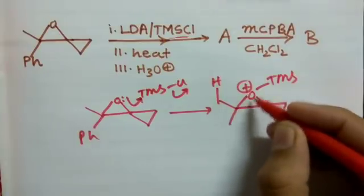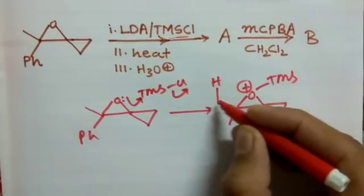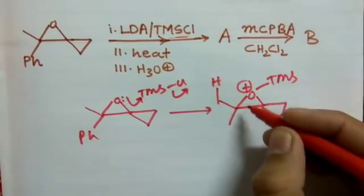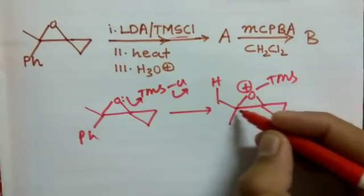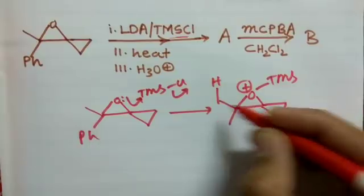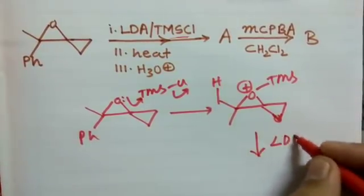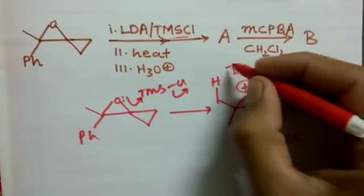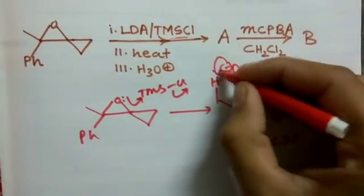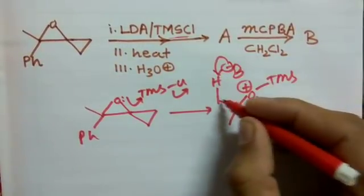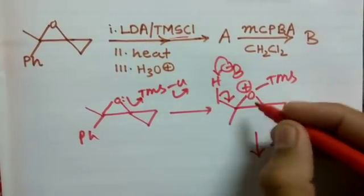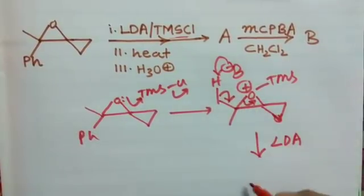As this positive charge is formed here, now this hydrogen can be acidic because this positive charge will induce electron deficiency in this carbon, and that will in turn make this hydrogen acidic. Now we have LDA and that LDA base can deprotonate from here. Then this bond will go here and this will open up. This is why it is basic—this bond can open now.